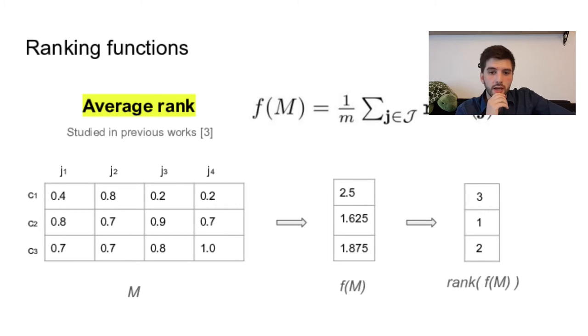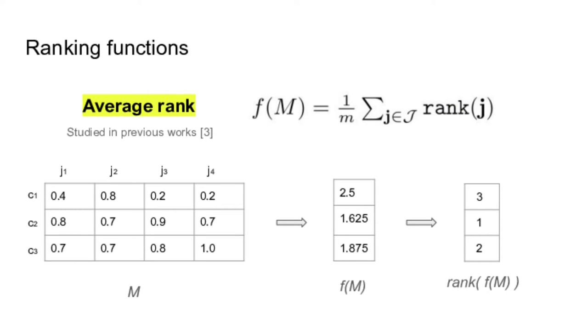The next ranking function is the average rank. So it's a really classical method that is often used. Here, you simply convert each column, so each judge, into a ranking, and then you do the average.